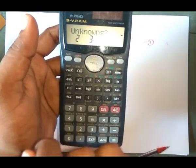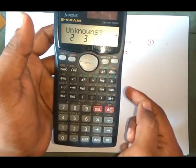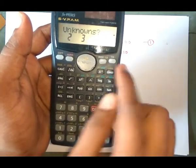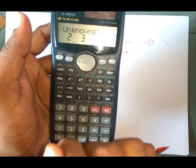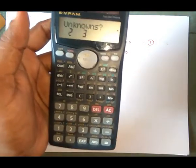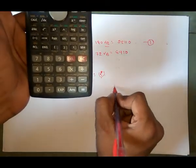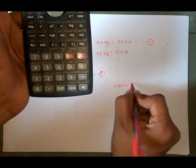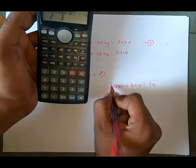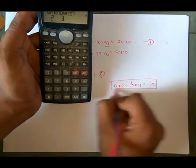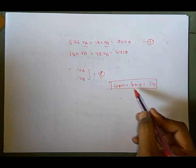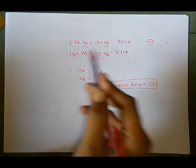It's going to ask for the number of unknowns. We can solve up to three unknowns. The format used by the calculator is: a·x plus b·y equals c. In calculator language it asks for a_n·x plus b_n·y equals c_n.